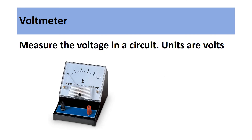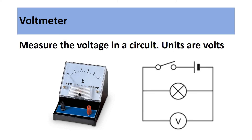Our next component is a voltmeter. The role of a voltmeter is to measure the voltage flowing in a circuit, and the units for this are volts. It can be placed within an electrical circuit, and in this diagram it is measuring the voltage before and after the light bulb.